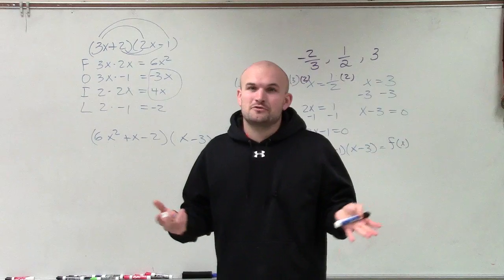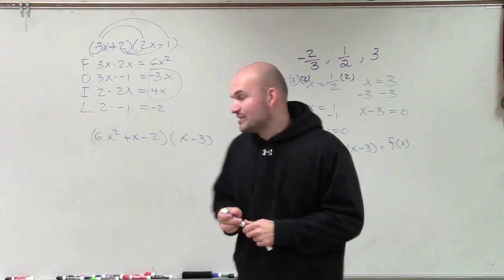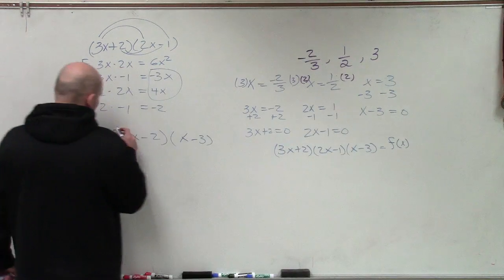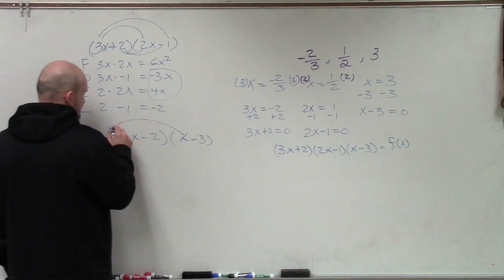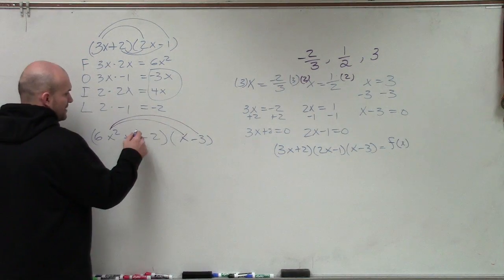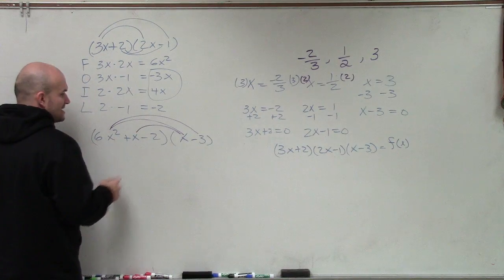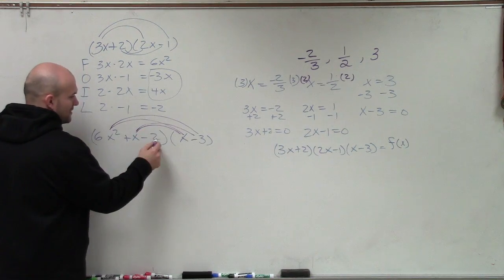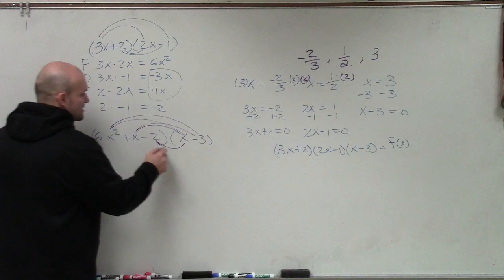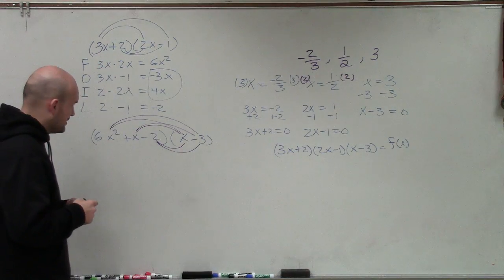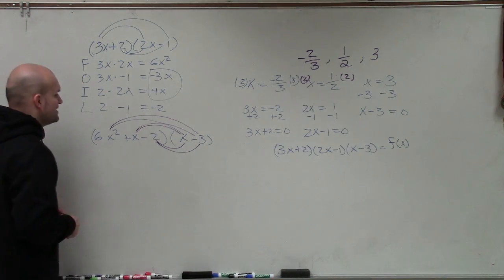FOIL is just a nice way for us to remember to really apply the distributive property among polynomials. So what I'm really going to do is just multiply the 6x squared times x, 6x squared times negative 3. Multiply the x times x, and then multiply x times negative 3. Multiply negative 2 times x, and then multiply negative 2 times negative 3. And I'm just going to write that down all below here.